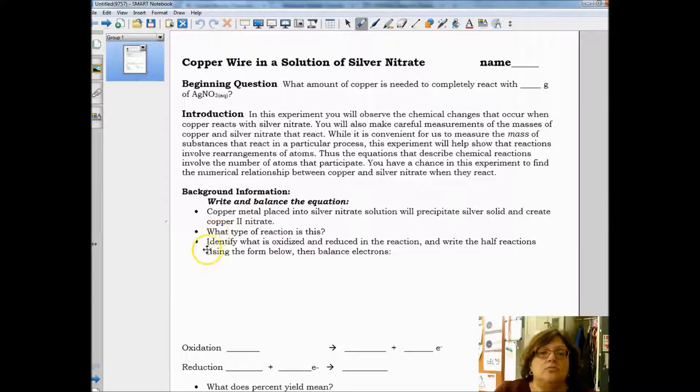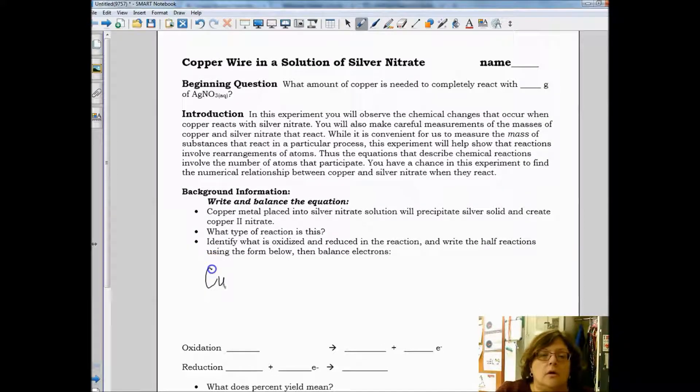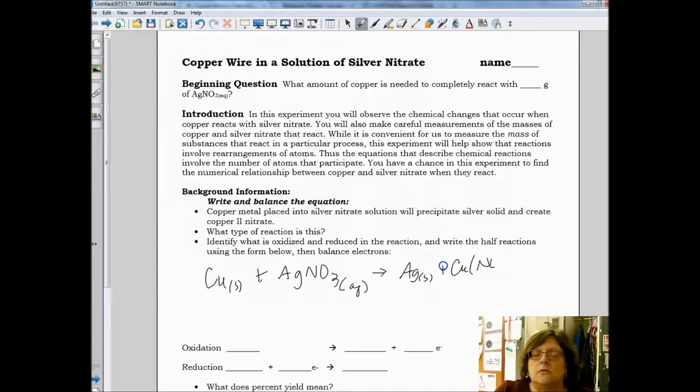The first thing we need to do is write and balance the equation. Copper metal placed into a silver nitrate solution will precipitate silver solid and create copper two nitrate. And that is an aqueous solution. What type of reaction is that? That's a single replacement.